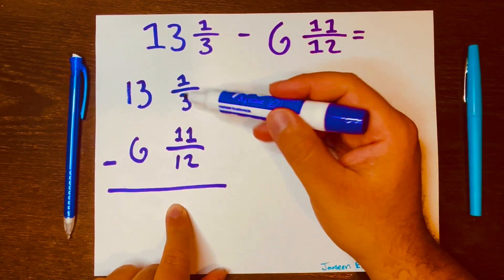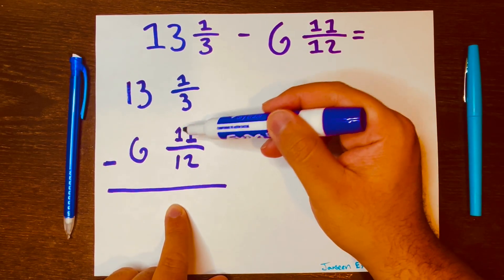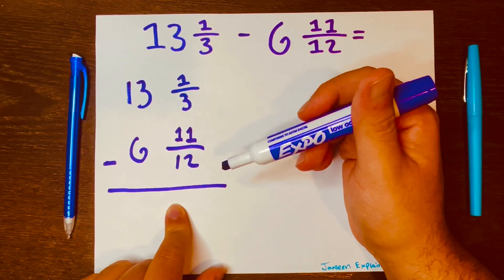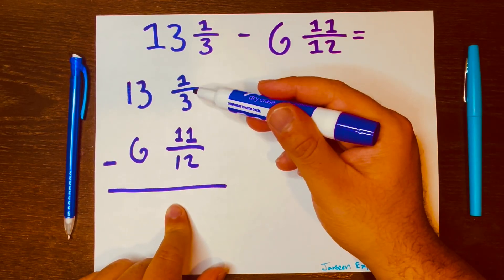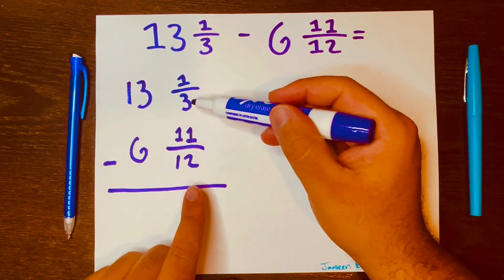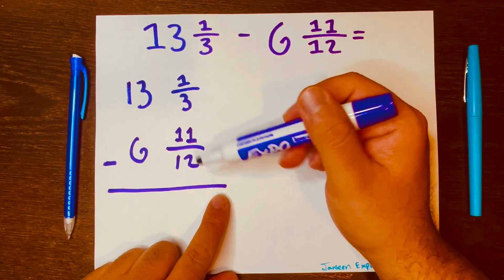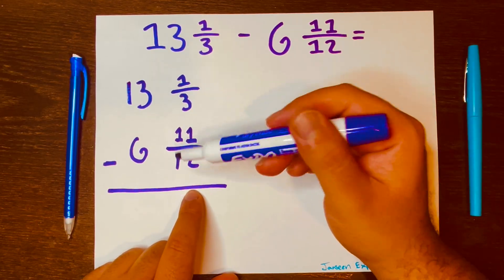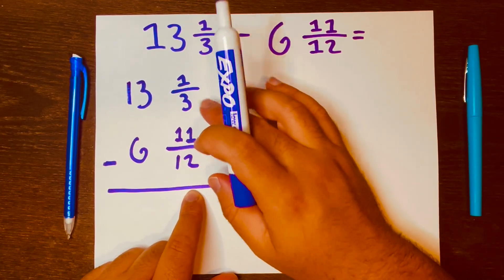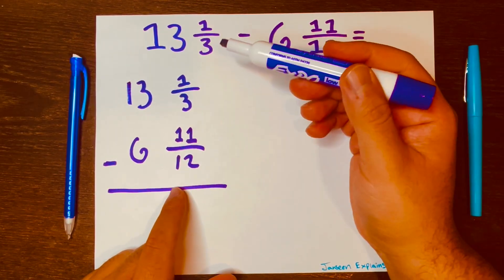So let's go ahead and subtract 1/3 minus 11/12. Now we cannot, and you know why, and that is because the denominators are different. We have a 3 and a 12. They need to be the same for us to subtract these fractions. So how can we make these fractions have the same denominator?